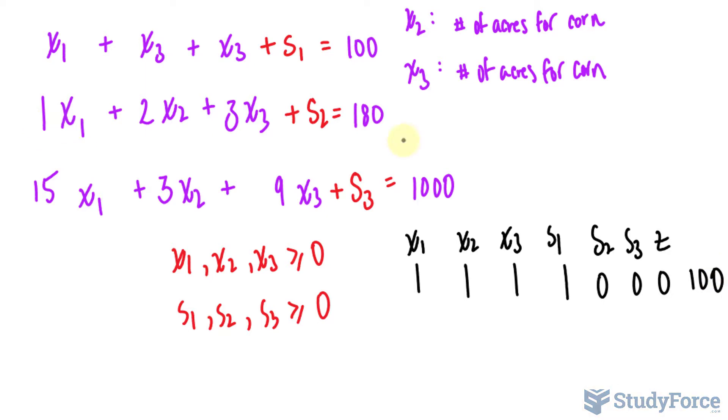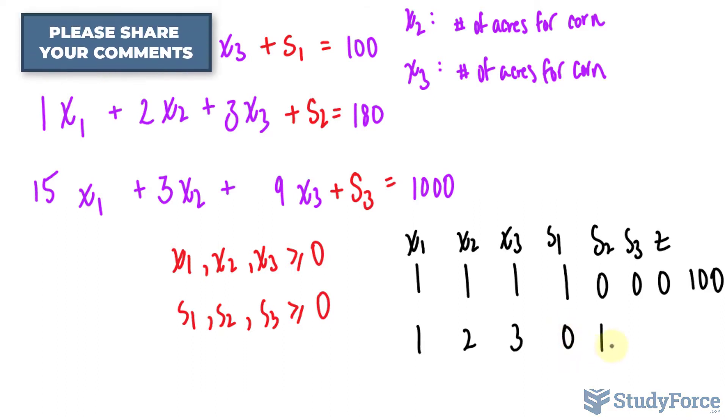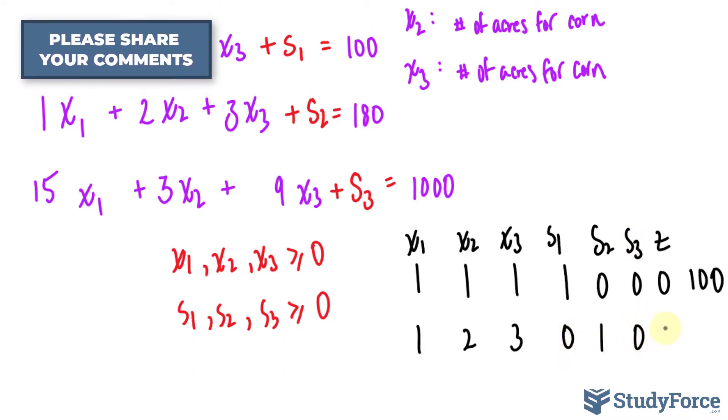For this equation, we have 1, 2, 3, no S sub 1, but there is an S sub 2, no S sub 3, and no z, and the constant is 180.